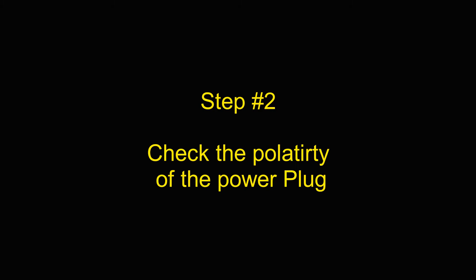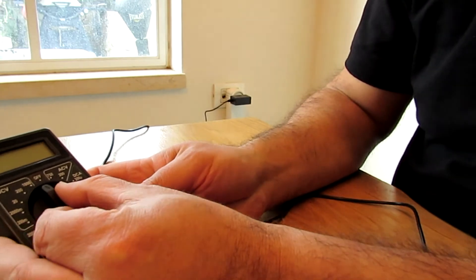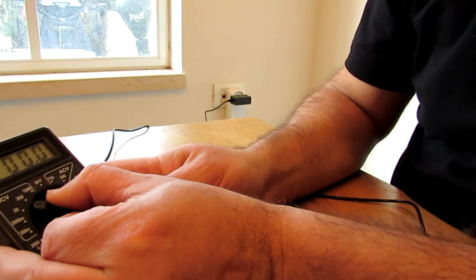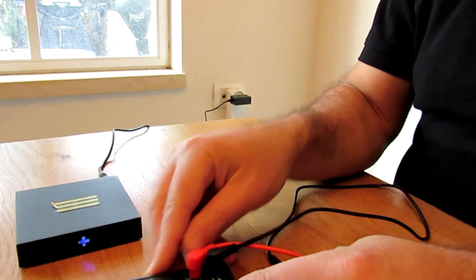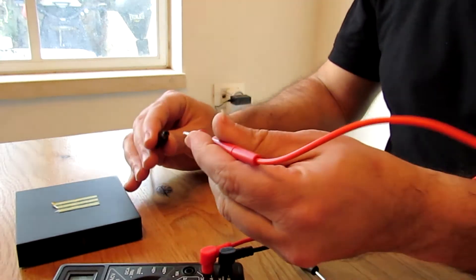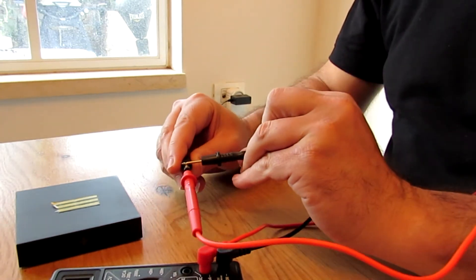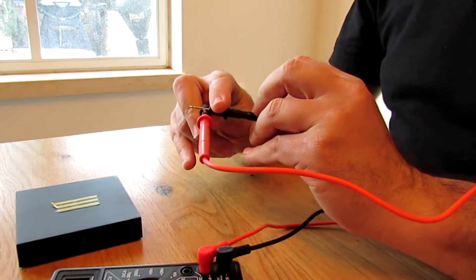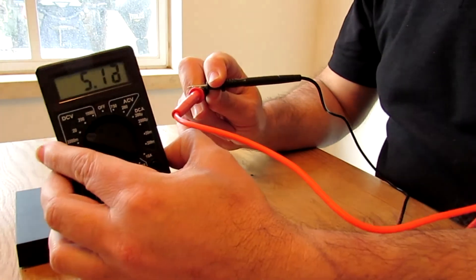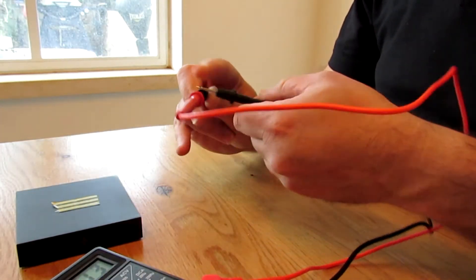Step number two: Check the polarity of the power plug. Usually, the central connection in the plug is the positive and the external part of the plug is the negative. If you got a positive result on the meter, then this is the case and we can continue the procedure.